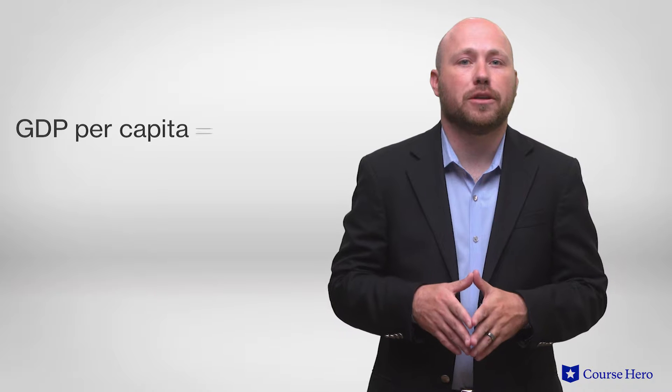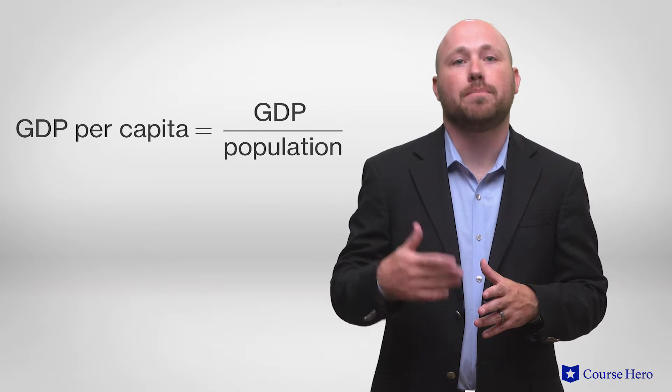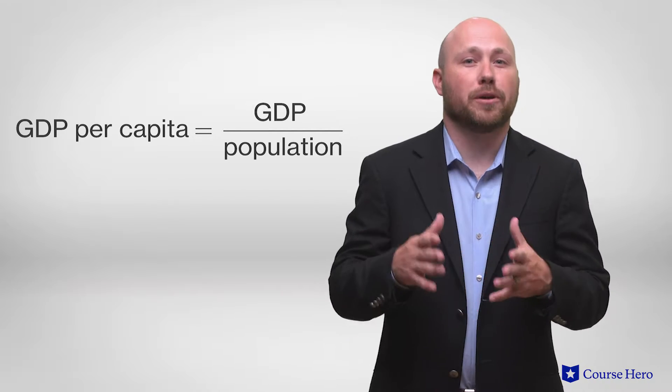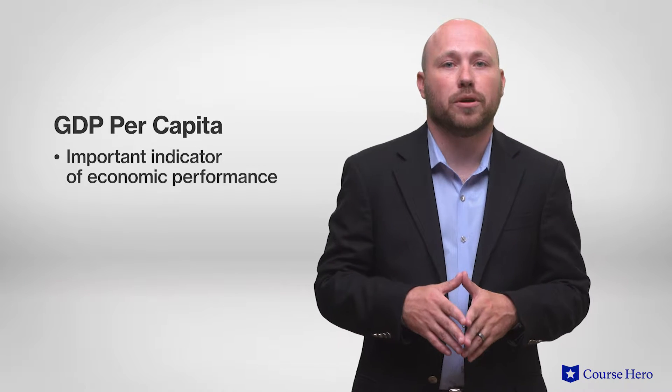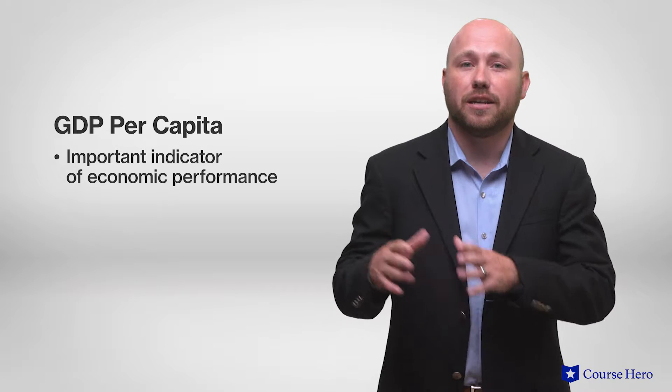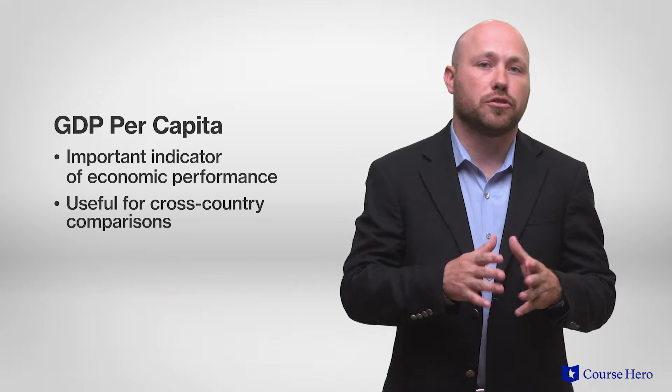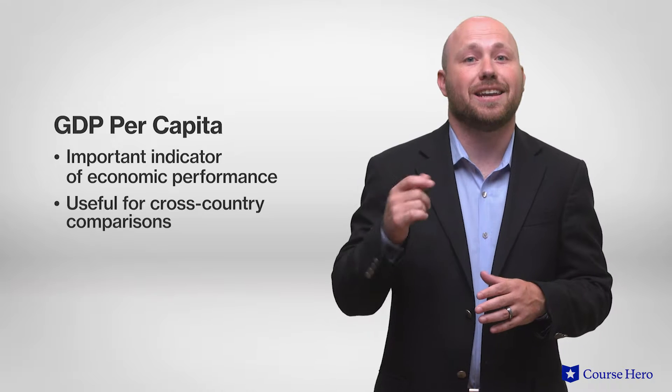GDP can be measured in different ways. GDP per capita is a measure of the total output of a country divided by the number of people in the country, equal to GDP divided by the population. It is an important indicator of economic performance and a useful unit for making cross-country comparisons of average standards of living. For example, China will have a higher GDP than the United Arab Emirates because of its economy's relative size, but China's GDP per capita will be lower due to its larger population.